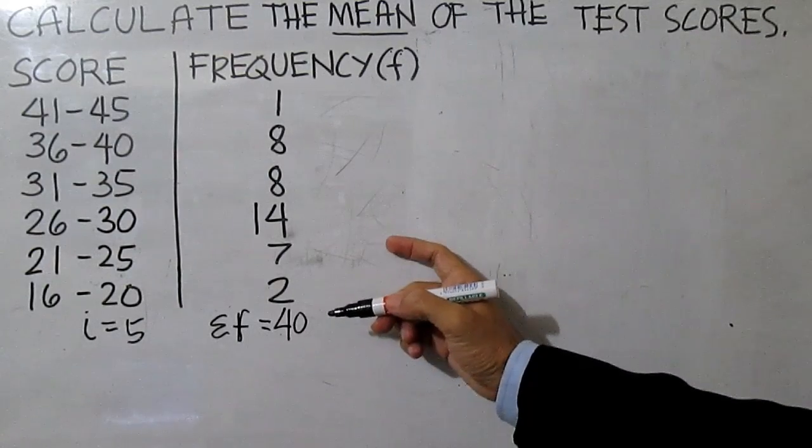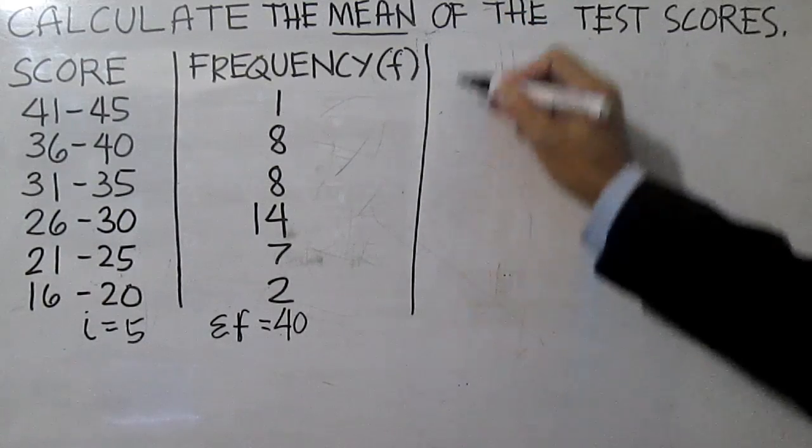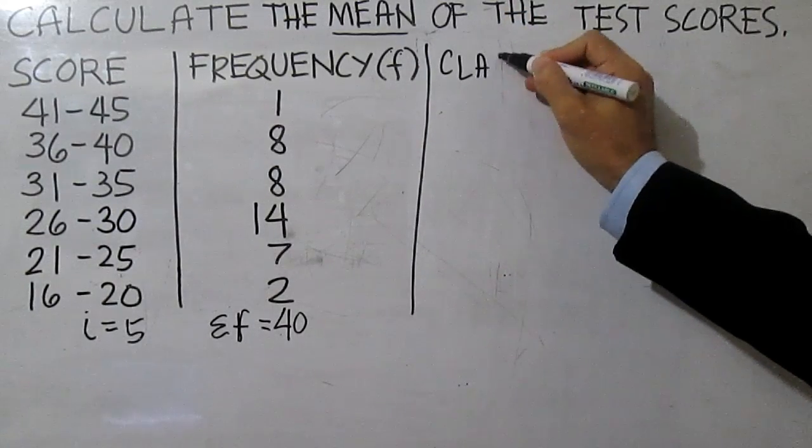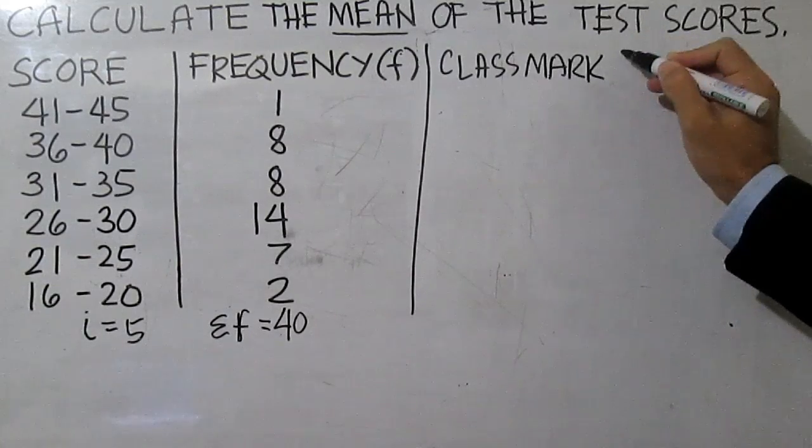To find the mean using the class mark, first compute the class mark of each class. It is simply the midpoint of a class.